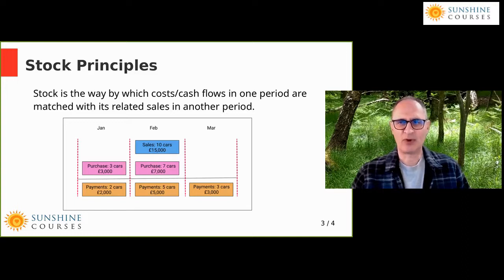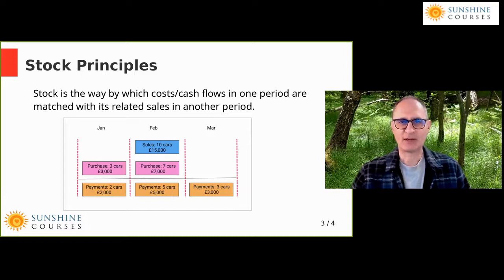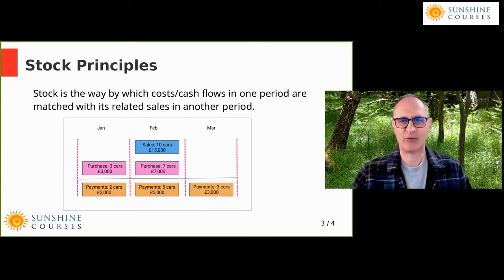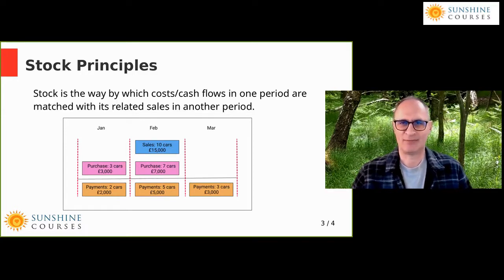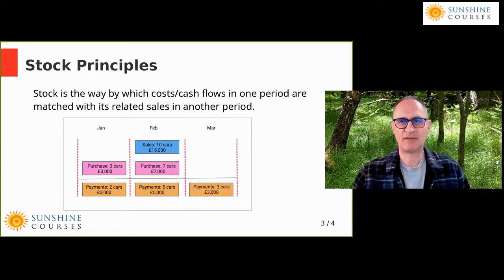If you remember in previous weeks, we've been talking about a car dealership. We had various costs incurred in January, and as it turns out, February and March, and yet all of our sales took place in February. So somehow we had to move costs from January and March to February, so that those costs match against the revenue they relate to — in simpler English, so that the cars sold in February have their costs accounted for in February, even if we bought the cars before or afterwards.